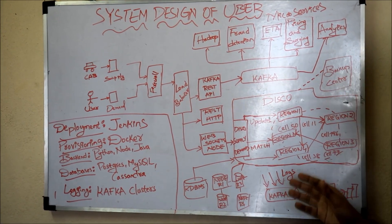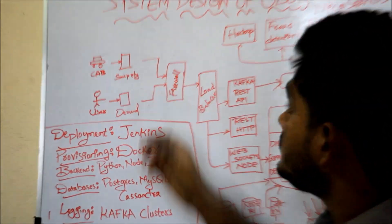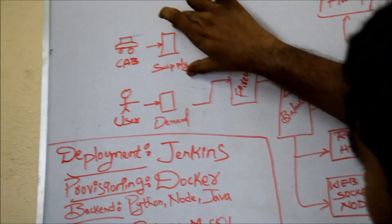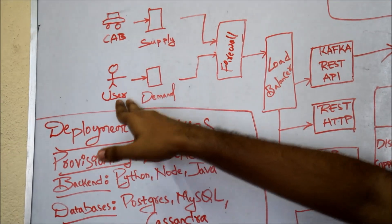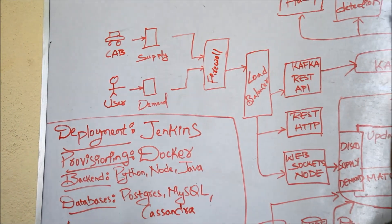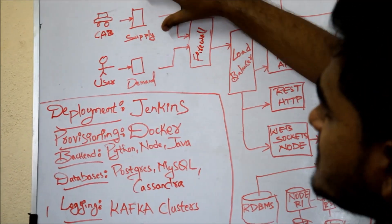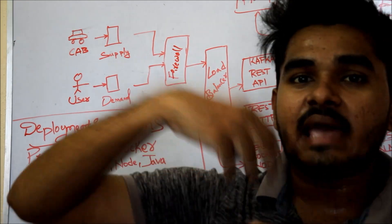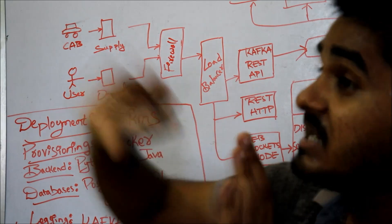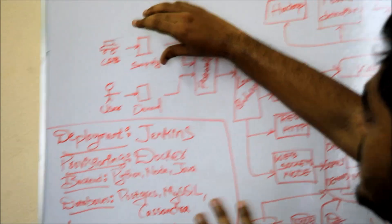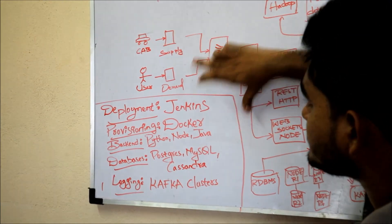Consider cab and user as the two endpoints. The cab is what the user books — there is supply on the cab side. On the user side, there is demand. When a user books a cab, the nearest cab is allocated to them — that is what we consider supply. From the cab driver's perspective, the user who books first in the nearby location is allocated to that cab driver — that is the demand here.